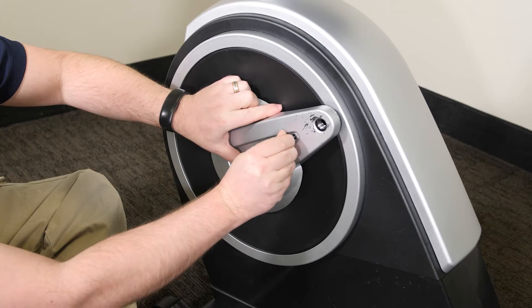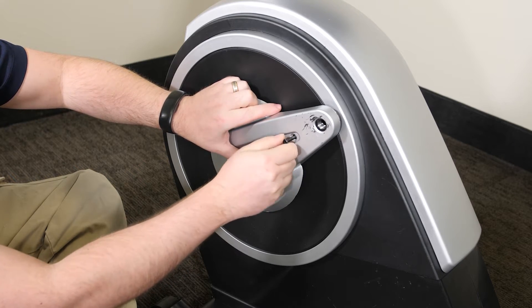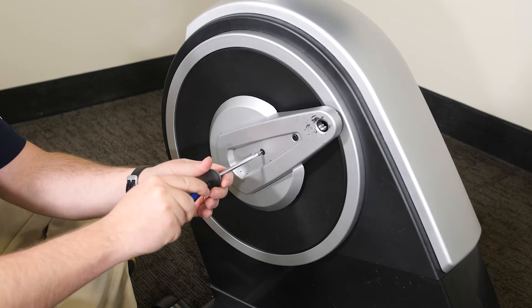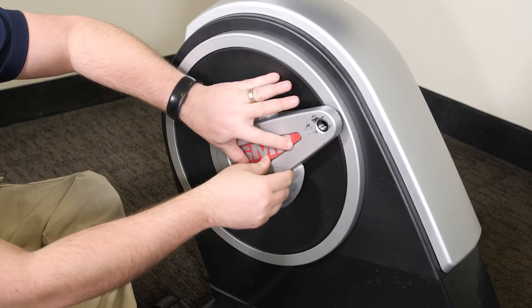When the read switch is correctly adjusted, reattach the shield cover with two Phillips head screws. Then replace the crank cover on the left shield cover.